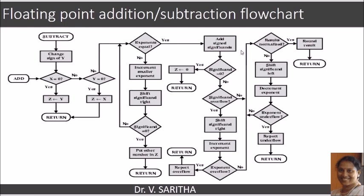If there is no exponent overflow, we verify whether the result is in normalized form. If it is normalized, we return the result. If it is not normalized, we shift the significand left and decrement the exponent. If the exponent underflows, we report underflow; otherwise, we repeat this process until the result is normalized. If there was no significant overflow to begin with, we go directly to checking whether the result is normalized.